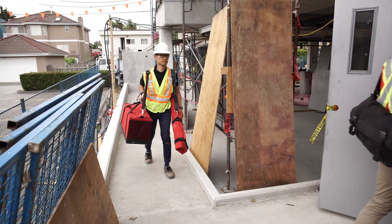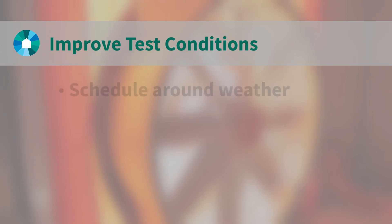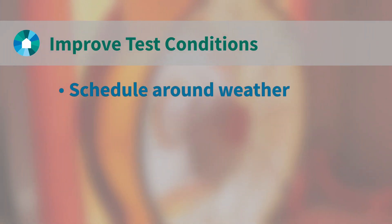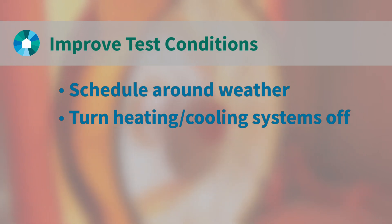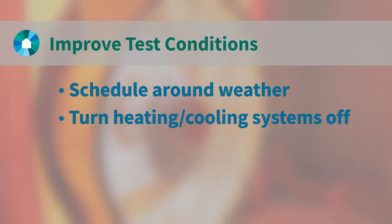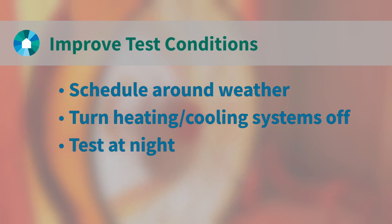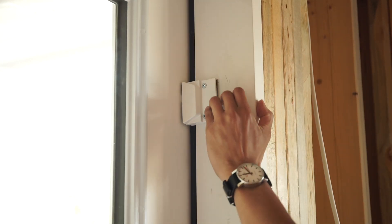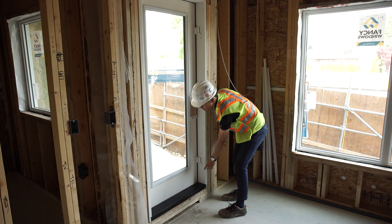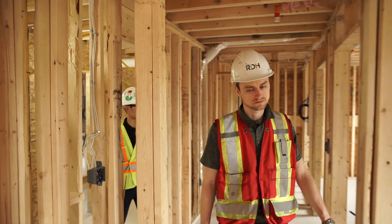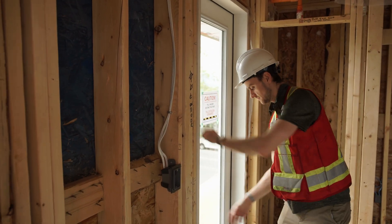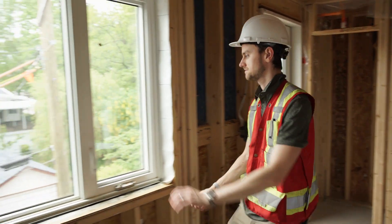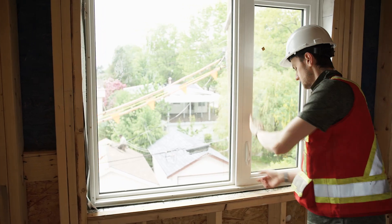Leading up to and during test day, the weather forecast should be tracked to confirm that temperature and wind conditions will be suitable. For large buildings, ensure the building isn't significantly heated or cooled compared to the outdoors, and consider testing at night when weather is stabilized. All exterior doors and windows must be closed and locked during testing. Complete a building walkthrough prior to running the quantitative test to check this, as one open window or door during the test, even for a second, can impact the test results.